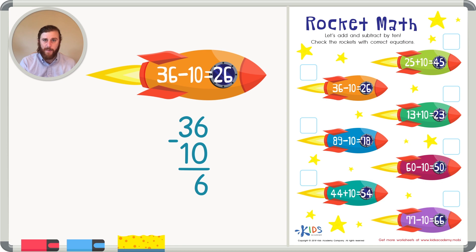And 3 minus 1 is 2. So we have an answer of 26. 36 minus 10 equals 26. This rocket is correct. Go ahead and check that.